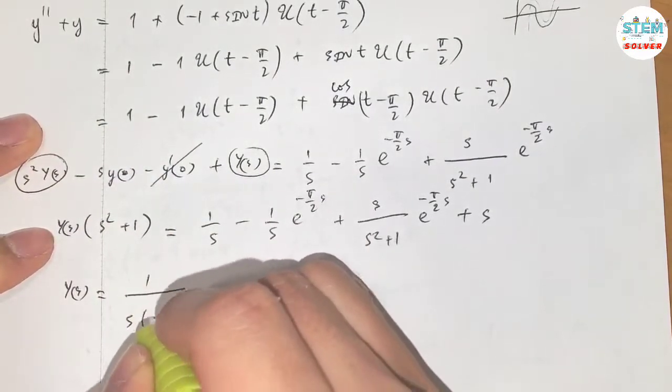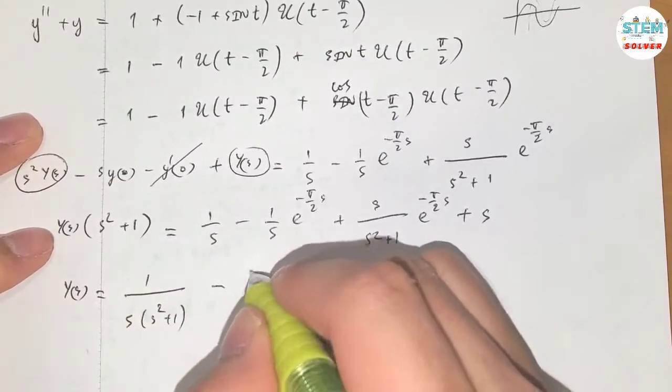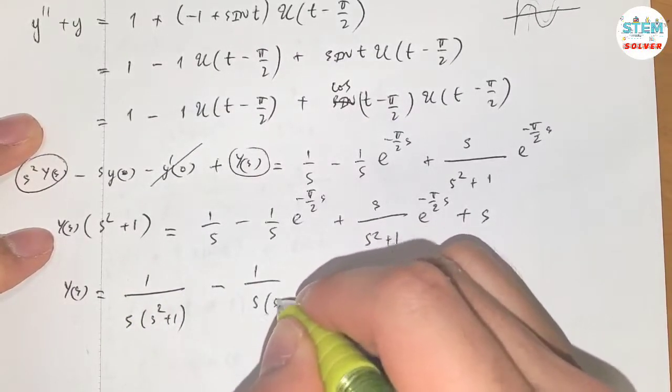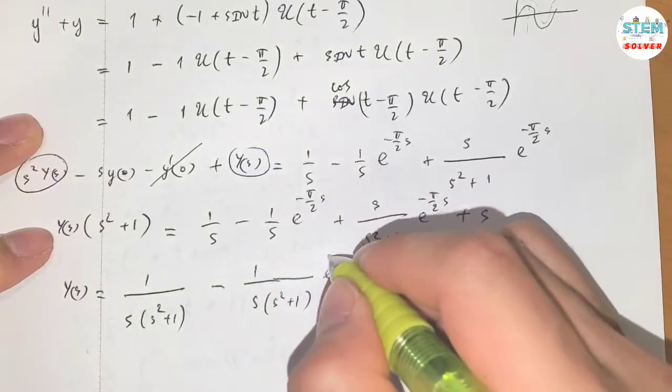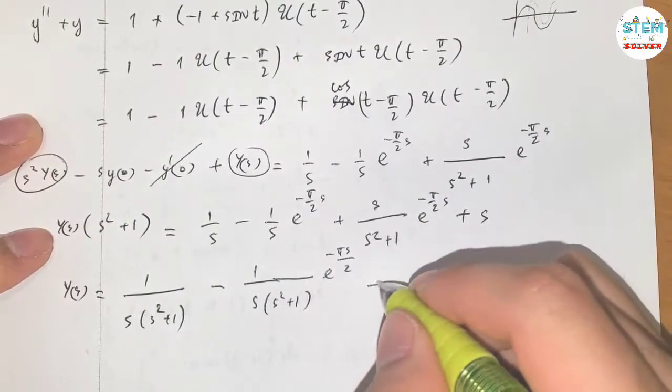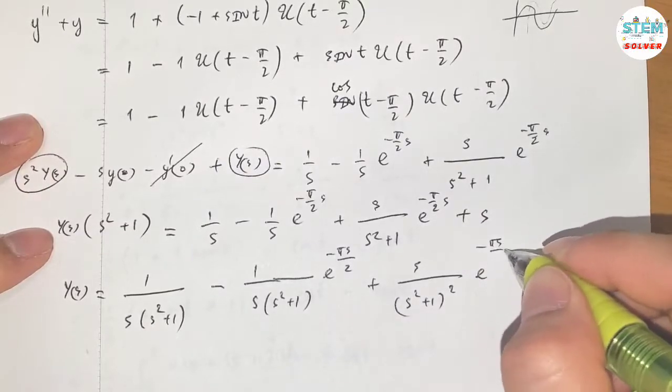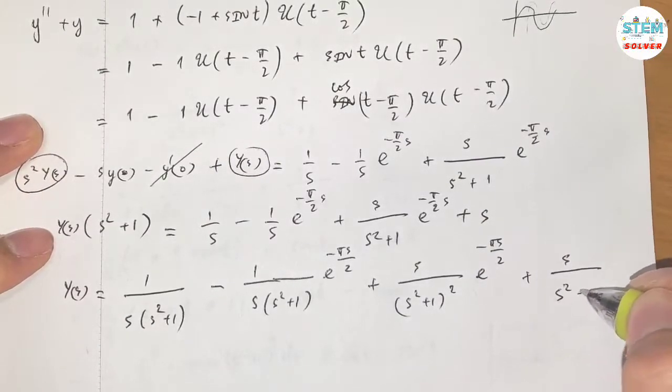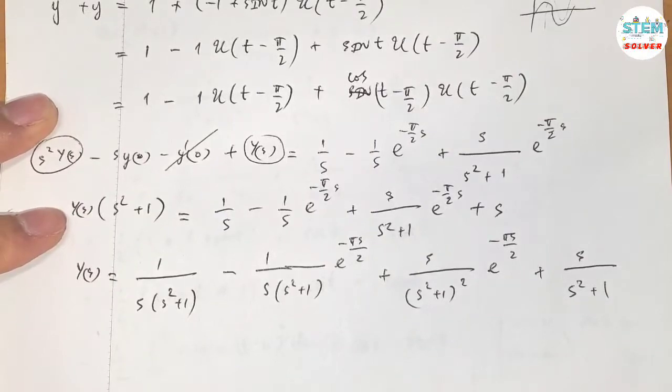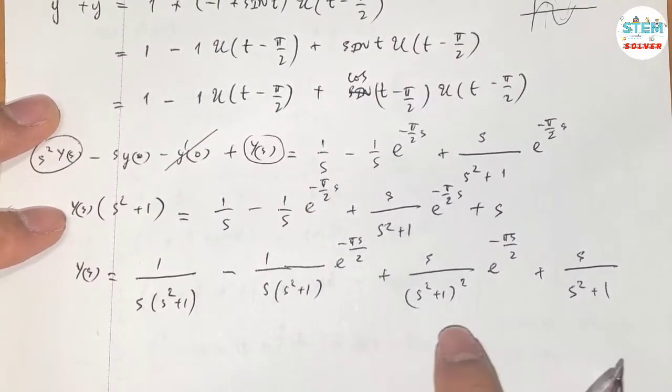Now let me divide both sides by s squared plus 1 to get capital Y of s alone. So I have 1 over s times s squared plus 1, minus 1 over s times s squared plus 1 e to the negative pi over 2 s, plus s over s squared plus 1 squared e to the negative pi over 2 s, plus s over s squared plus 1.